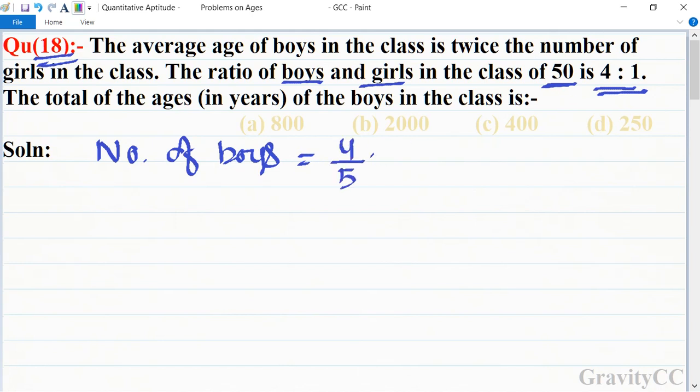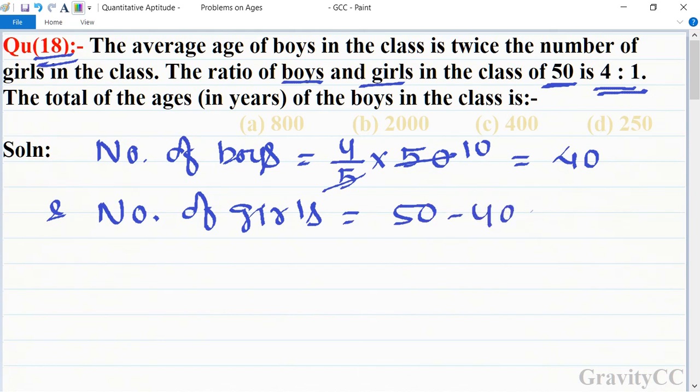4 upon 5 into 50. So 10 times 5 is 50, and 10 times 4 is 40. So the number of boys is equal to 40, and the number of girls is equal to 50 minus 40, which is equal to 10.